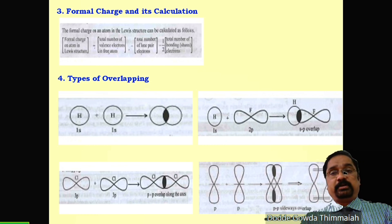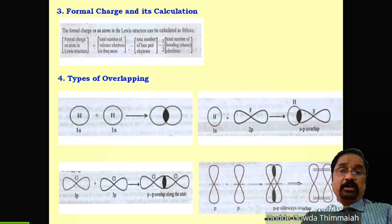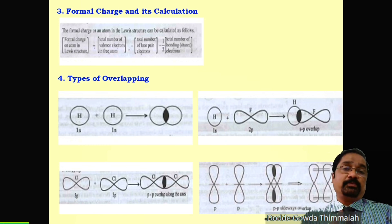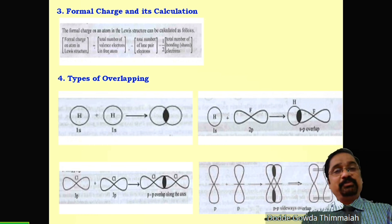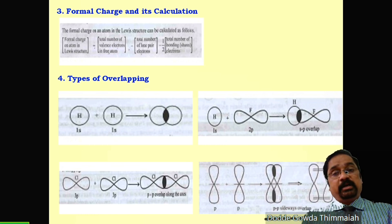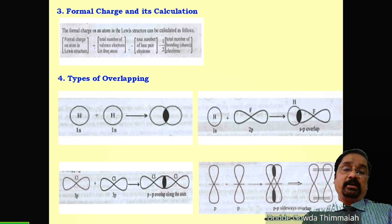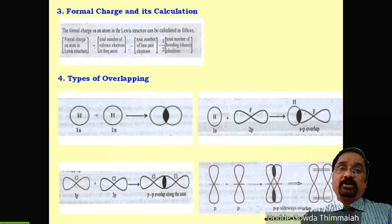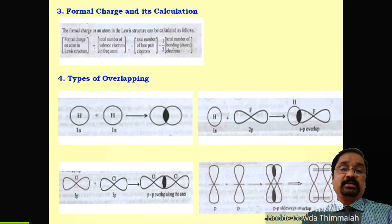Let us take up types of overlapping. This concept says a covalent bond is formed only when atomic orbitals overlap. If the orbitals overlap head-on, they form a sigma bond. If they overlap sideways — lateral overlapping — it gives the pi bond. For example, S-S orbital overlap forms an S-S sigma bond. In hydrogen fluoride, S orbital and P orbital (dumbbell shape) overlap head-on to form an S-P sigma bond. Sideways P-P overlapping gives the pi bond.